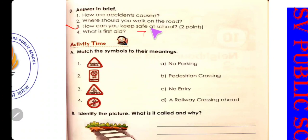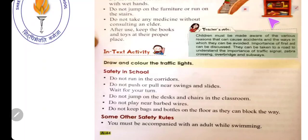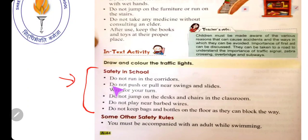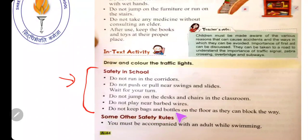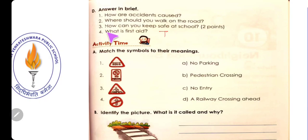Number three: How can you keep safe at school? School में आप कैसे safe रह सकते हो? आपको कोई भी two points लिखने हैं। Options include: do not run in the corridors, do not push or pull near swings and slides, wait for your turn, do not jump on desks and chairs in the classroom, do not play near barbed wires, do not keep bags and bottles on the floor as they can block the way. These are all safety rules in school.